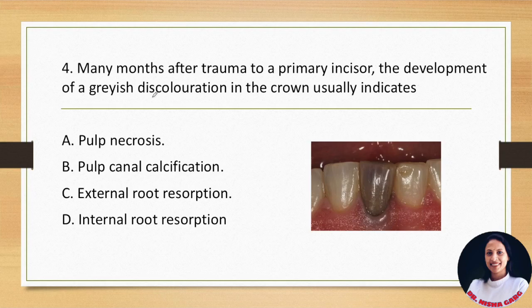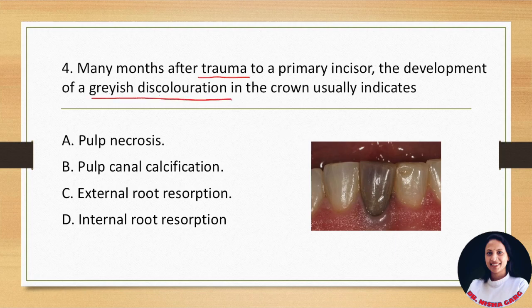Many months after trauma to a primary incisor, the development of grayish discoloration in the tooth crown usually indicates: A. Pulp necrosis, B. Pulp canal calcification, C. External root resorption, D. Internal root resorption. In the case of pulp canal calcification, grayish coloration is not seen. In external root resorption, grayish discoloration is also not seen. And in internal root resorption, the pathognomonic feature is the pink tooth appearance.